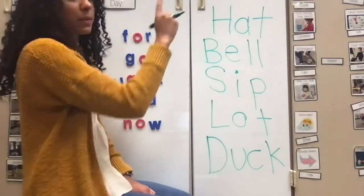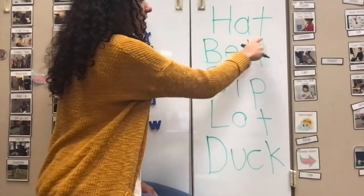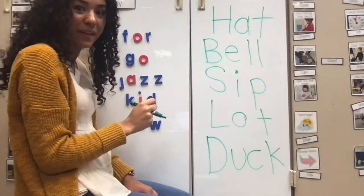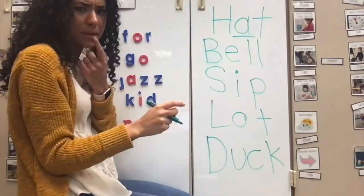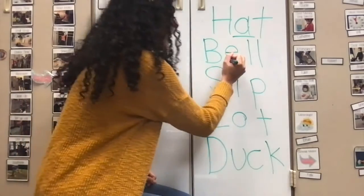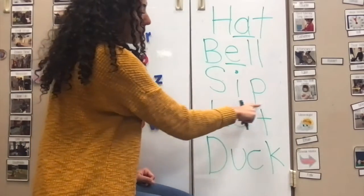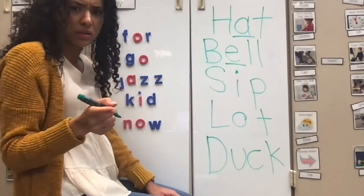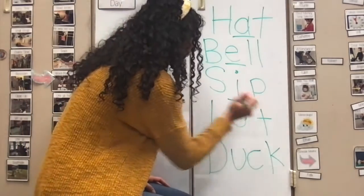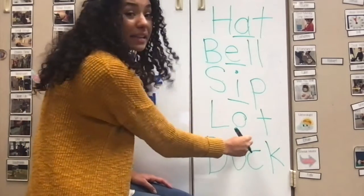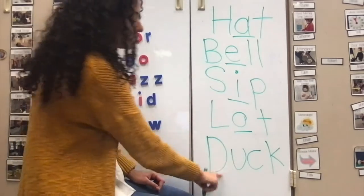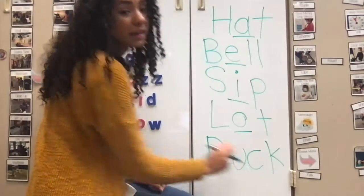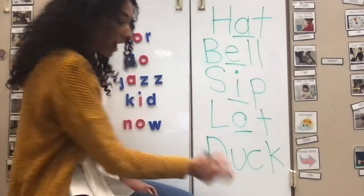Now we're going to go through all the words and find the middle sound. H-A-T. Hat. What's the middle sound? A. A-A-A. B-A-L-L. What's the middle sound? A-A-A. S-I-P. Sip. What's the middle sound? I. I-I-I. L-O-T. Lot. What's the middle sound? O. A-A-A. D-U-K. Duck. What's the middle sound? A-A-A. You did it. Way to go.